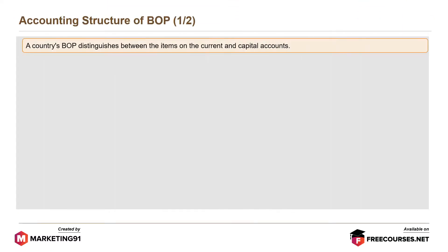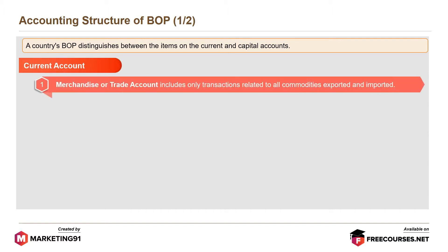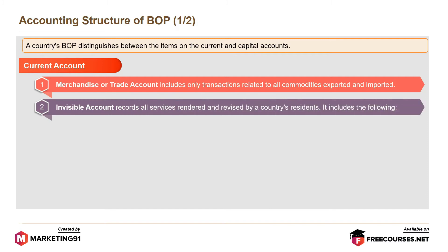A country's BOP distinguishes between the items on the current and capital accounts. Current account includes the Merchandise or trade account, which includes only transactions related to all commodities exported and imported, and the Invisible account, which records all services rendered and received by a country's residents.